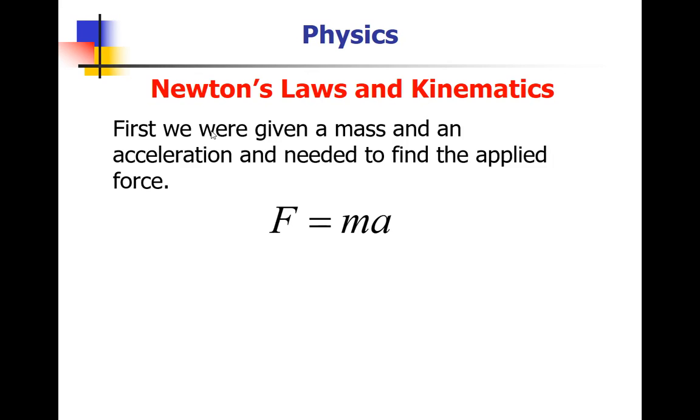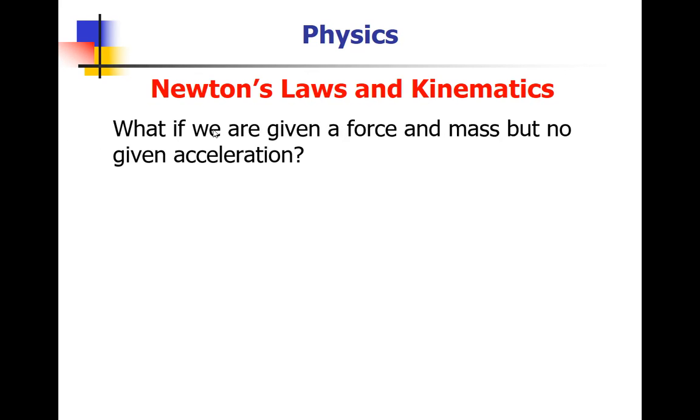Now, on our next step, we added algebra to this. You were given a force and a mass, but no given acceleration. How do you solve Newton's second law for acceleration? Well, F is MA. Easy enough to get mass from one side to the other. Acceleration is now force divided by the mass.